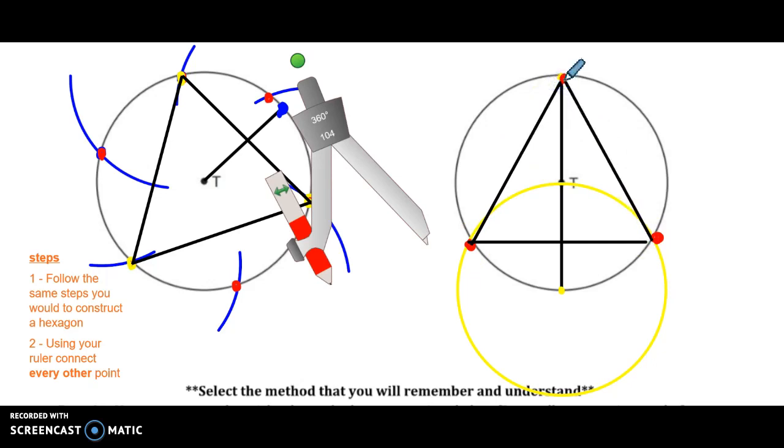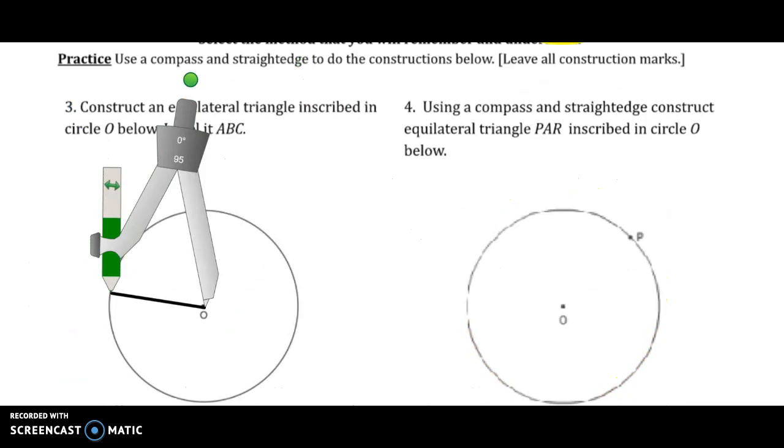So these are the two methods that you can use to construct equilateral triangles. For each of the practices below, I will pick one of the methods and that's the one I will use to show you how to do the practice question. For the first one I will use the hexagon method, and for the second one I will use the second method which involves making that second circle.